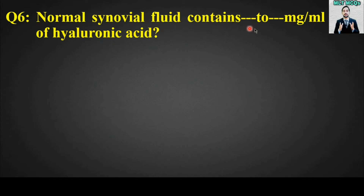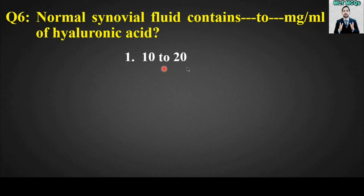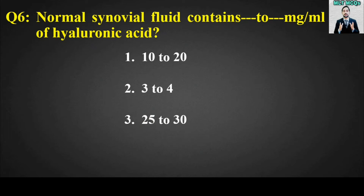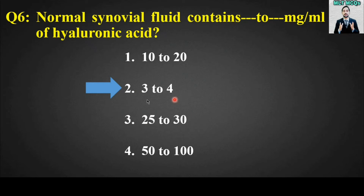MCQ number six: Normal synovial fluid contains blank to blank mg per ml of hyaluronic acid. Options are: 150 to 100, or 50 to 100. The right answer for this MCQ is option number two — it contains 3 to 4 milligram per milliliter of hyaluronic acid.